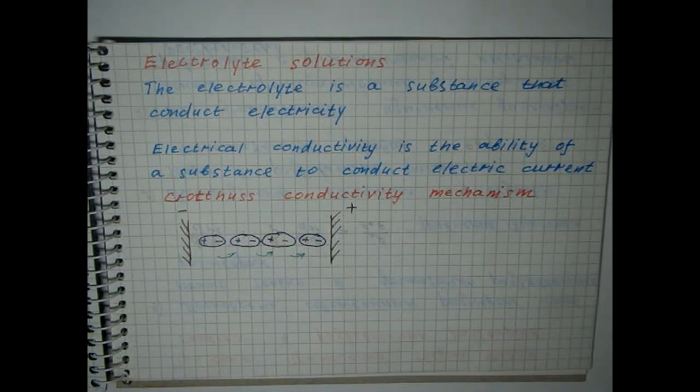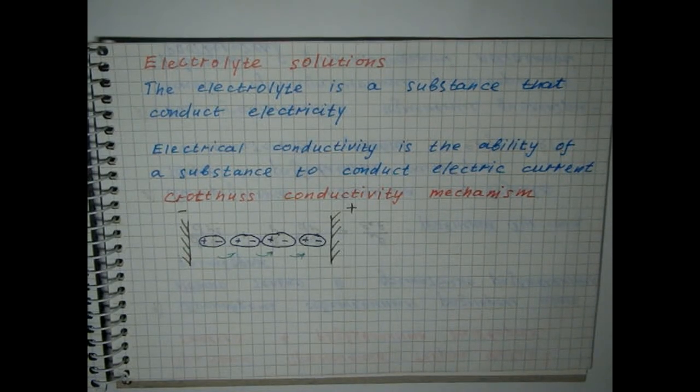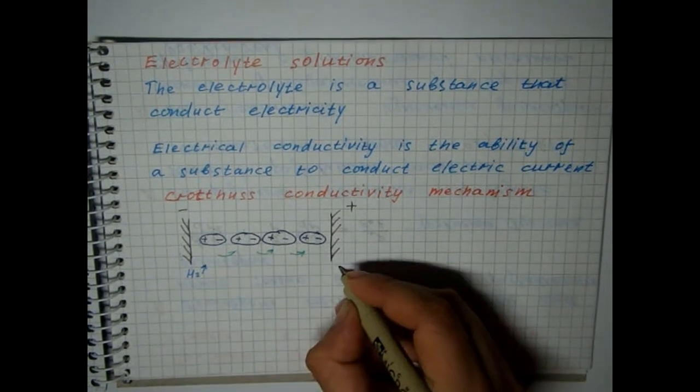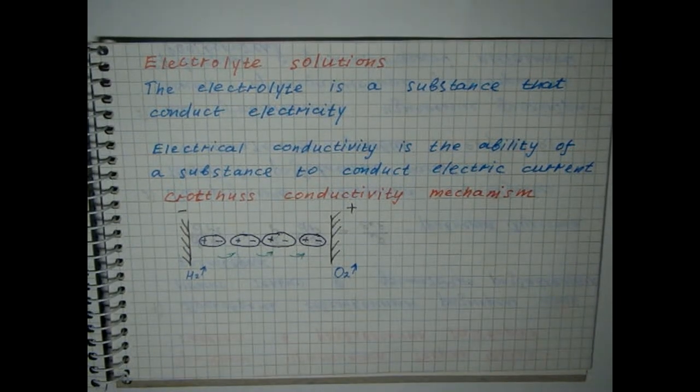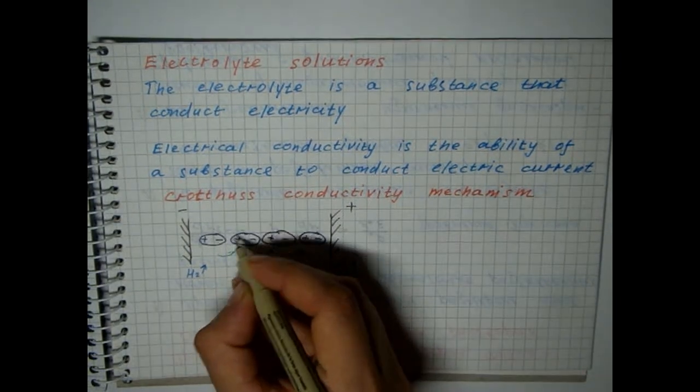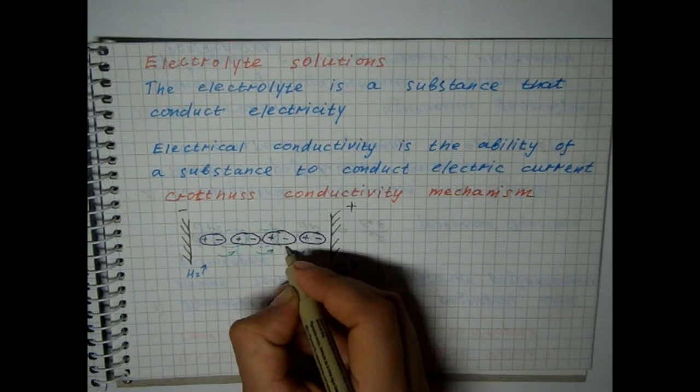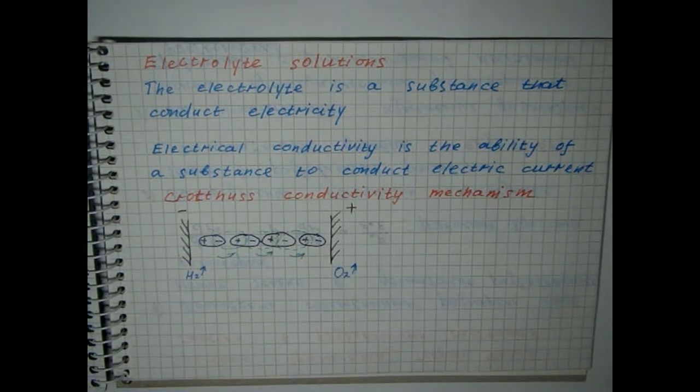During electrolysis, the positive end of the water dipole is split off and hydrogen is formed at the cathode. Oxygen is similarly formed at the anode. After that, rearrangement of the positive and negative ends of the dipoles occurs and they are reoriented in the direction of the electric field.